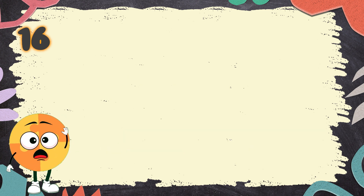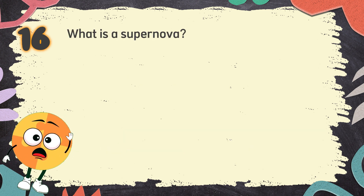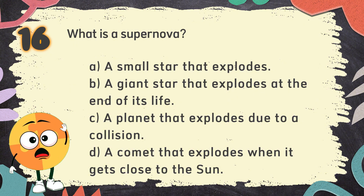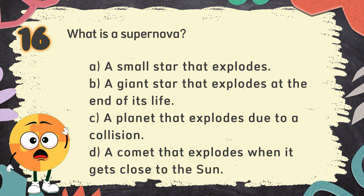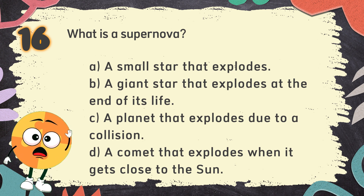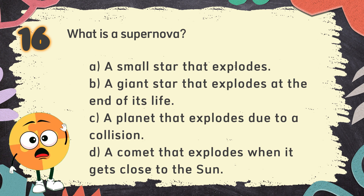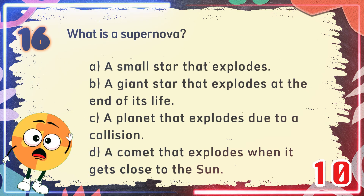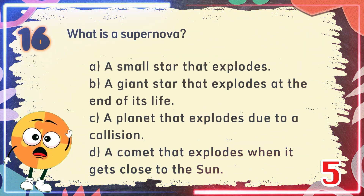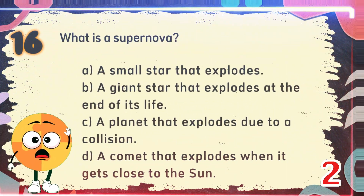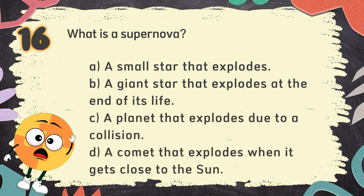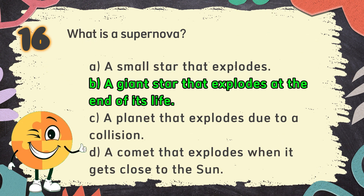Number 16. What is a supernova? The choices are: A. A small star that explodes. B. A giant star that explodes at the end of its life. C. A planet that explodes due to a collision. D. A comet that explodes when it gets close to the Sun. The correct answer is B: a giant star that explodes at the end of its life.